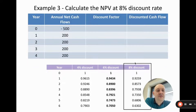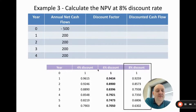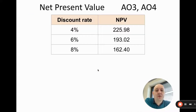Pause the video if you want to try the eight percent calculation yourself. The answer is NPV = 162.4.